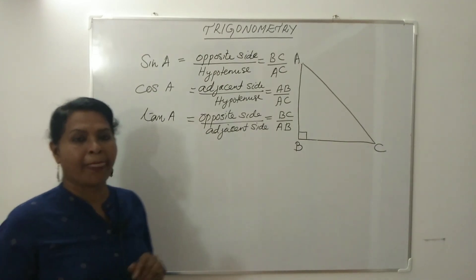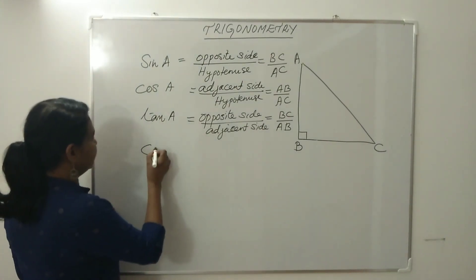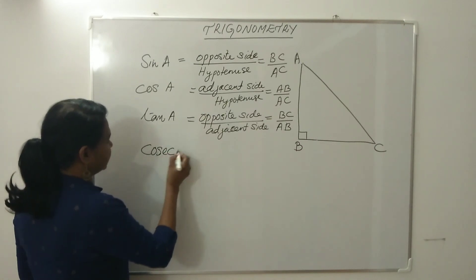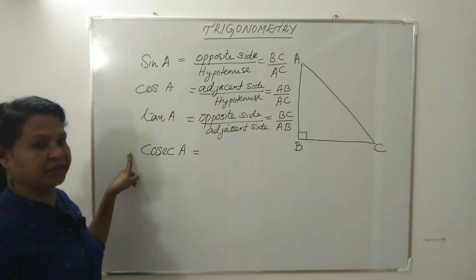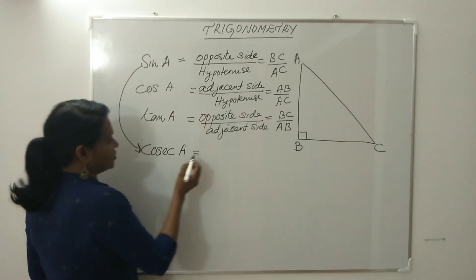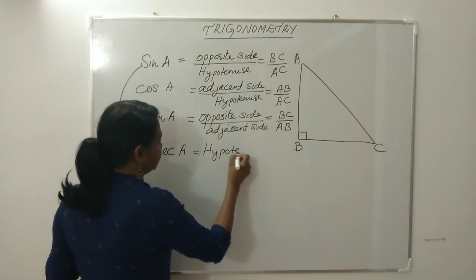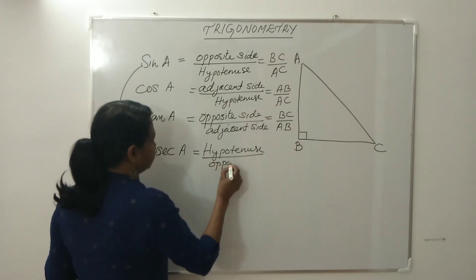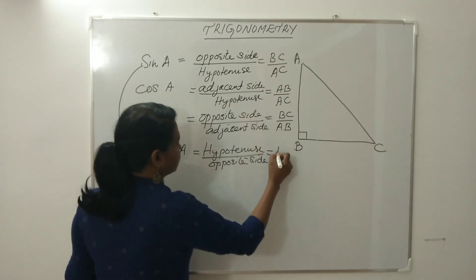Now, cosecant — short form is cosec. Cosec A is the reciprocal of sine. So cosec A equals hypotenuse divided by opposite side, which is AC divided by BC.